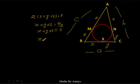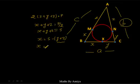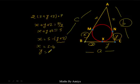From X + Y + Z = S, we get X = S − (Y + Z). Since Y + Z = B (side AC), X = S − B. Working on Y: Y = S − C, where C is side AB. And Z = S − A, where A is side BC.